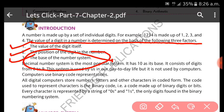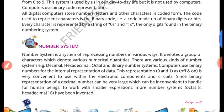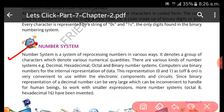All digital computers store numbers, letters, and other characters in coded form. The code used to represent characters is the binary code — that is zero and one. A number system is a system of representing numbers in various ways. There are various kinds of number systems: decimal, hexadecimal, octal, and binary.